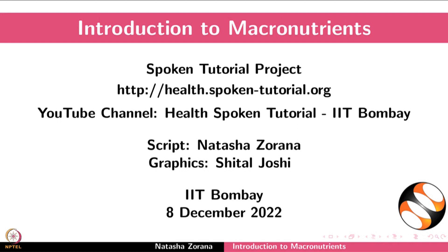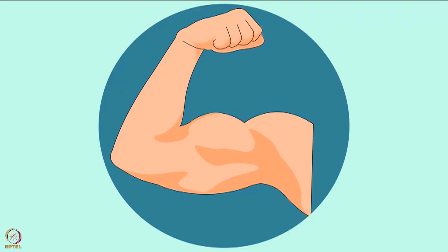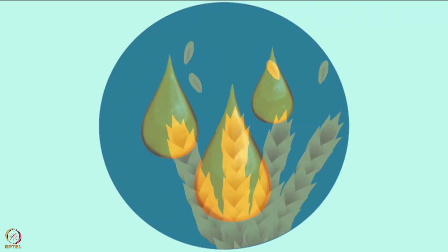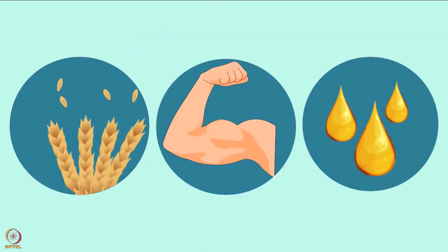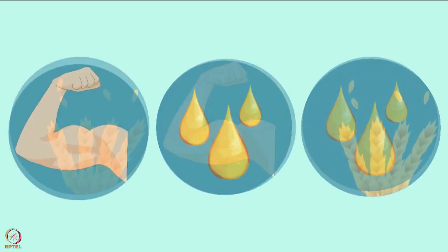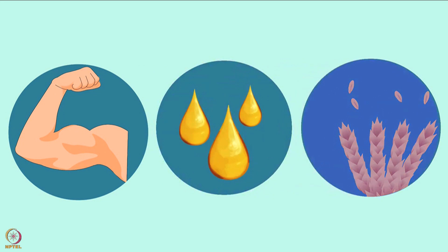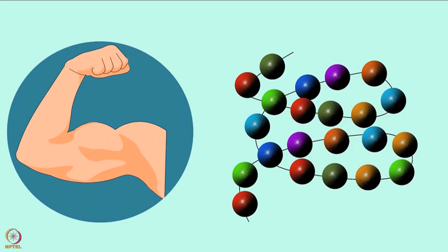Welcome to the spoken tutorial on the introduction to macronutrients. In this tutorial, we will learn about proteins, fats, carbohydrates. Macronutrients or macros are important nutrients. They include proteins, fats and carbohydrates. Let's learn more about each of these macros, starting with proteins.